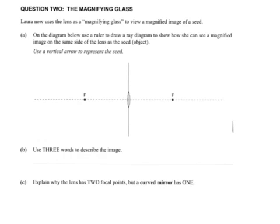Laura now uses the lens as a magnifying glass to view a magnified image of a seed. On this diagram we have to draw a ray diagram to show how an image can be seen as magnified. So I use a vertical arrow to represent the seed.